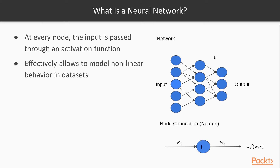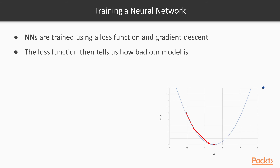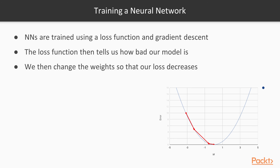So how do we train a neural network? We train it using a loss function and something called gradient descent. Imagine we have a neural network and a way to measure how well it's doing — we pass some example images through and get a score of the accuracy. If we can parameterize that accuracy in terms of the network parameters, we can then find which direction we want to move the parameters to minimize the error. That's effectively what gradient descent does.